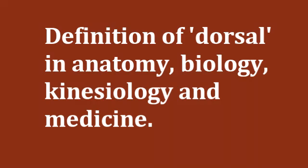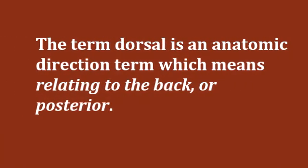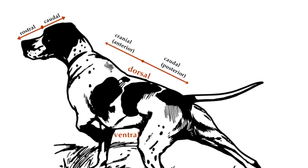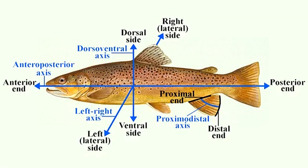Definition of dorsal in anatomy, biology, kinesiology, and medicine. The term dorsal is an anatomic direction term which means relating to the back or posterior. The term is useful in humans when it pertains to the hands and feet, and more useful overall in quadrupeds and fish, where the term posterior refers to the tail region as opposed to the anterior or head region.